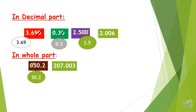In the number 207.003, if we look at the whole part, it starts with 2 — it has no leading zero. So we cannot cross any zero in the whole part. And if we look at the decimal part, it does not end with a zero — it ends with the number 3. So we can't cross out any zeros.